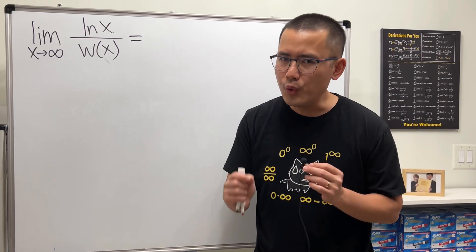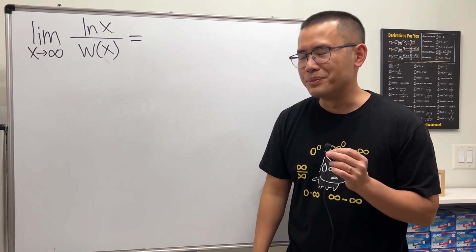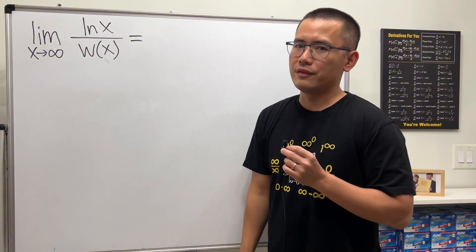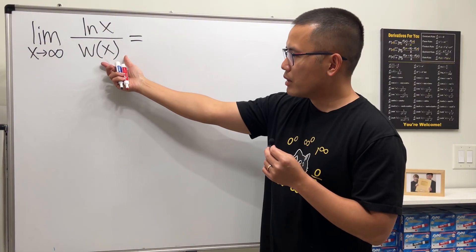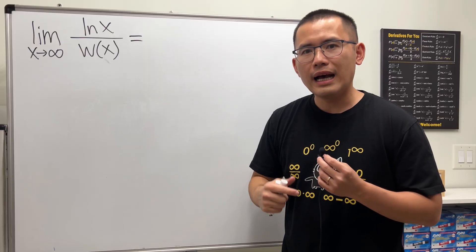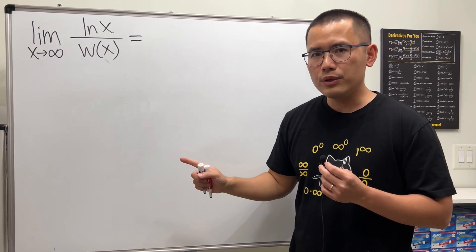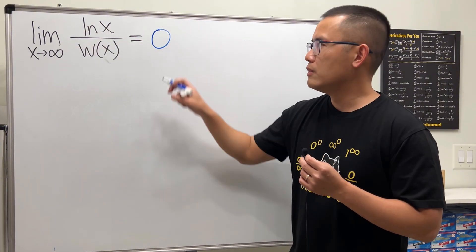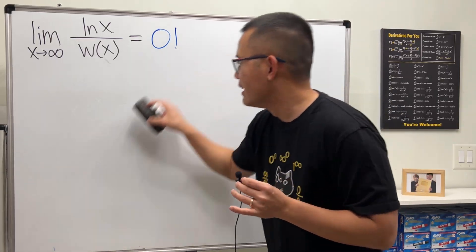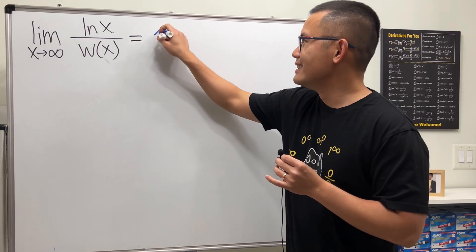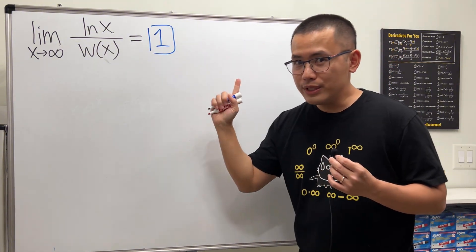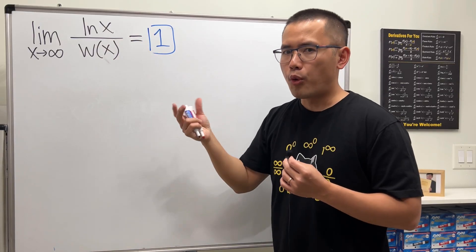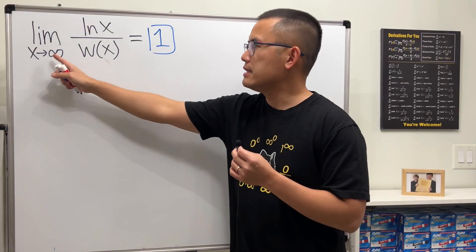Today let's do the coolest limit on YouTube: the limit as x approaches infinity of ln(x) over the Lambert W function of x. You might be wondering what the Lambert W function is — don't worry, I'll give a quick review. But first, the answer is equal to one. This is really cool because it shows that the Lambert W function and ln(x) are approximately the same as x goes to infinity.